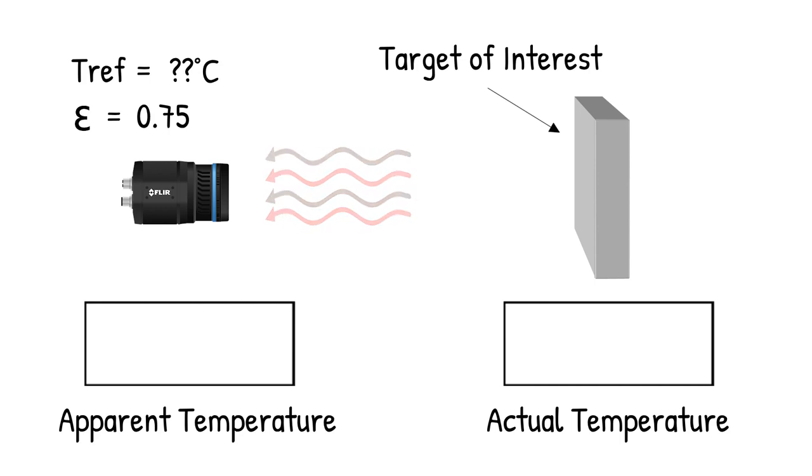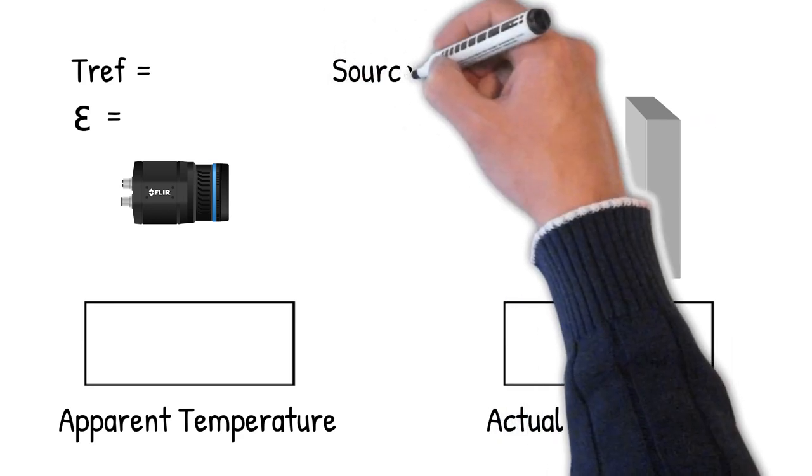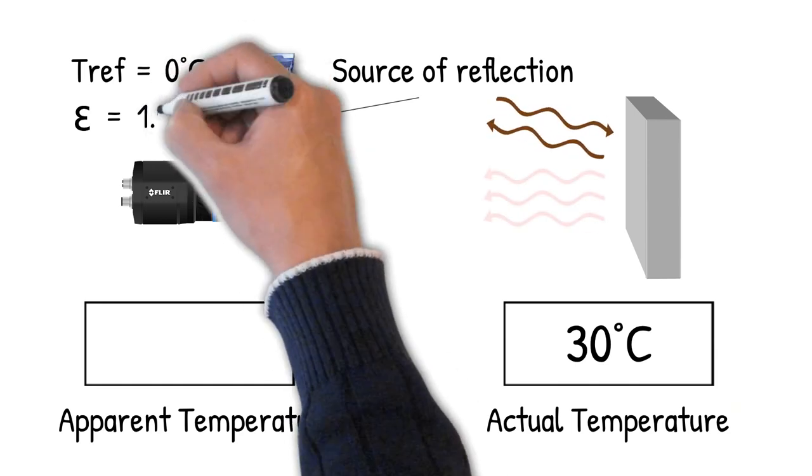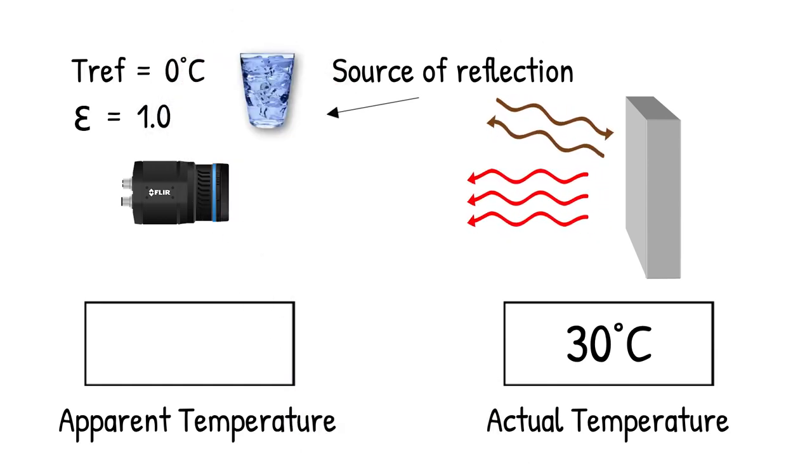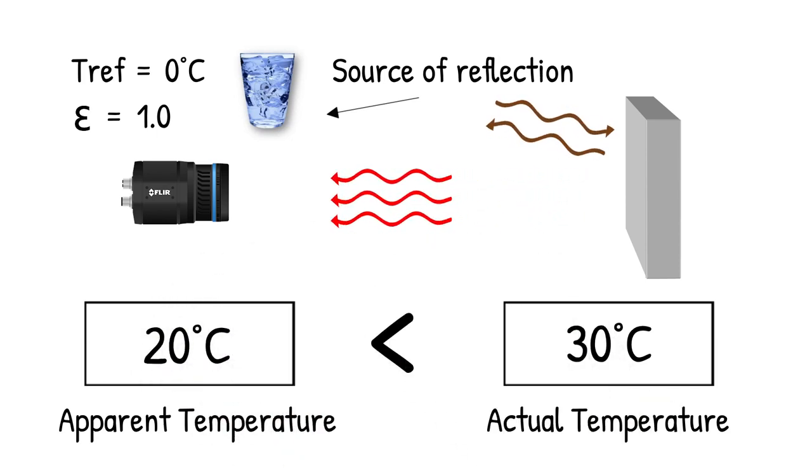If the temperature of the target of interest is 30 degrees C, and the source of reflection is a large cup of ice water with a temperature of 0 degrees C, and the camera emissivity setting is set to 1, the camera will report an apparent temperature lower than the actual target temperature.